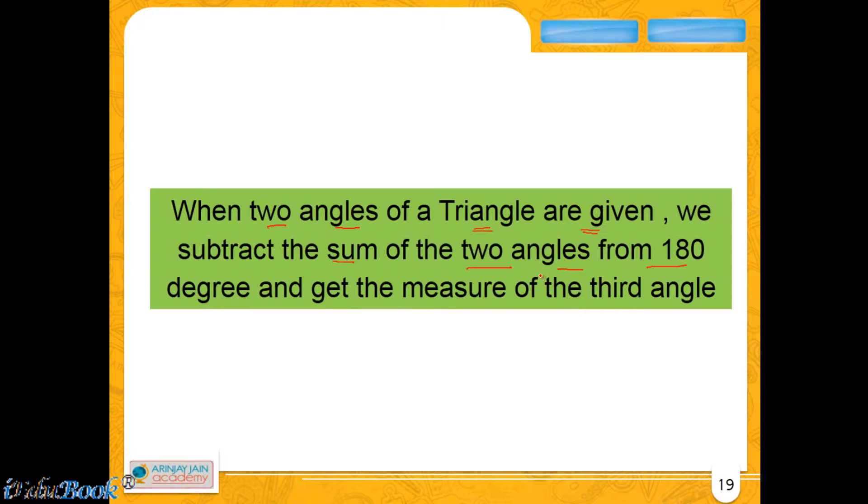This is actually very simple. If you are told that A + B + C is equal to 180 degrees - why 180 degrees? Because of the angle sum property of a triangle. The sum of all three angles of a triangle is 180 degrees. If you know the value of two angles, it's easier to find the third one.